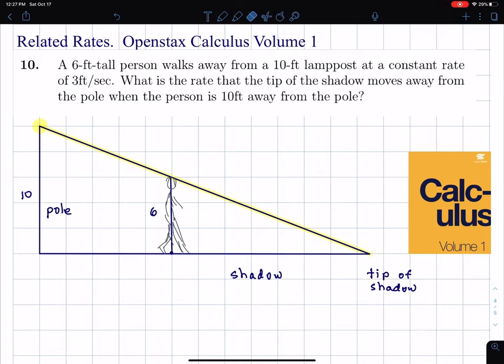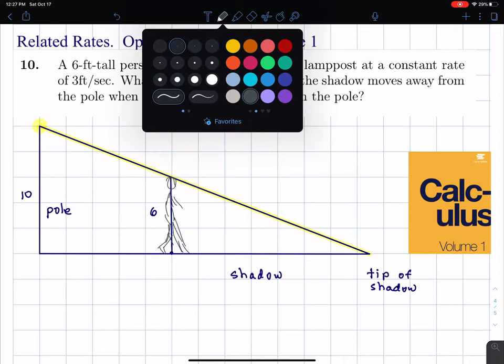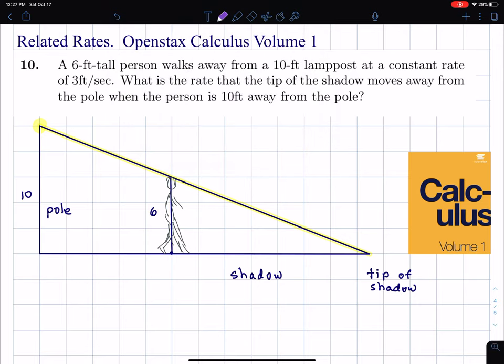So I've drawn a picture of the person, and the person's walking away from the pole, and the person leaves a shadow. So here's my picture of a shadow there, that's that dark purple. And as he moves away, or she, the shadow moves also.